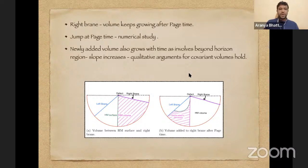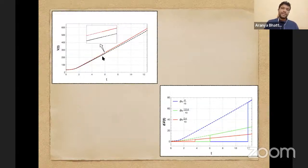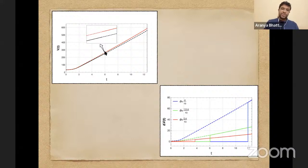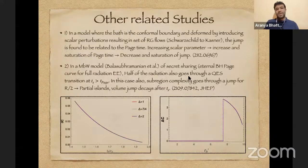This region includes beyond-horizon contributions, so the complexity of the radiation-analogous region keeps growing, with a jump at page time. This jump itself keeps growing after page time as well, as shown by comparing the plots before and after the transition.